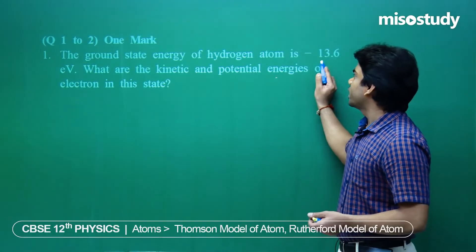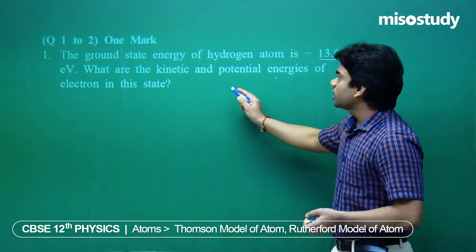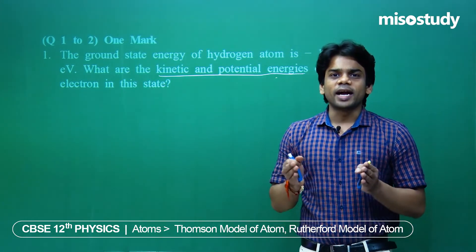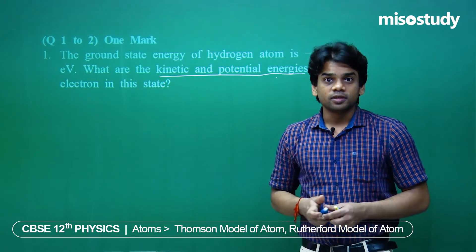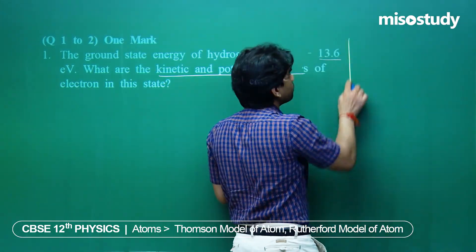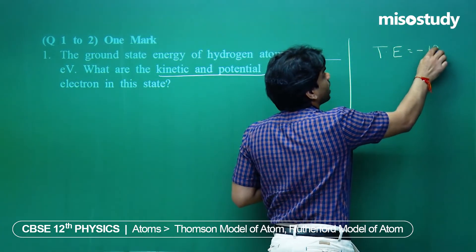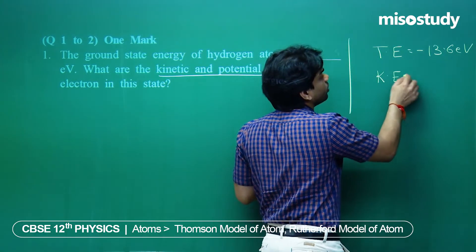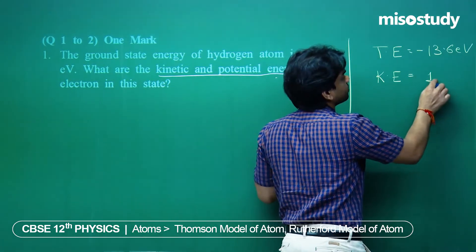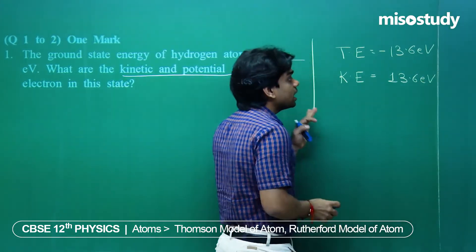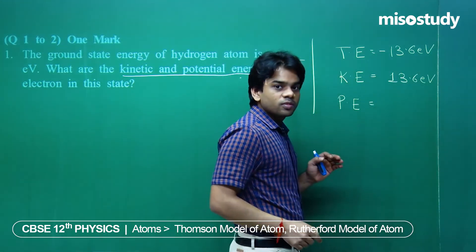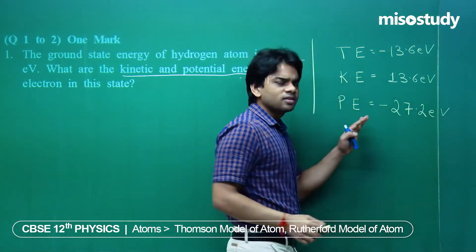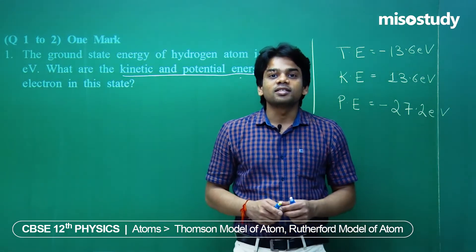The ground state energy of a hydrogen atom is minus 13.6 electron volt. What are the kinetic and potential energies of the electron in this state? The kinetic energy will be of the same magnitude but positive: 13.6 electron volt. The potential energy will be twice the magnitude with the same sign as total energy: minus 27.2 electron volt.